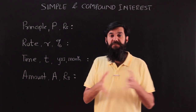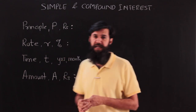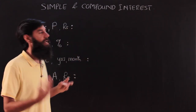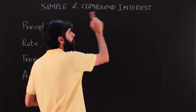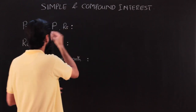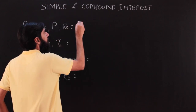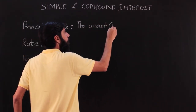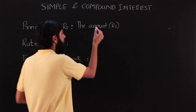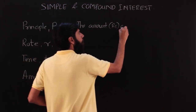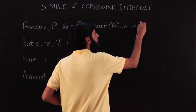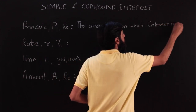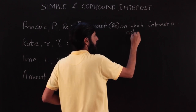Principle is a quantity that specifies an amount of money in rupees. This is the only term which would require a little explanation depending upon whether it is simple or compound interest. Principle is the amount — the sum of money on which the interest is calculated or paid.